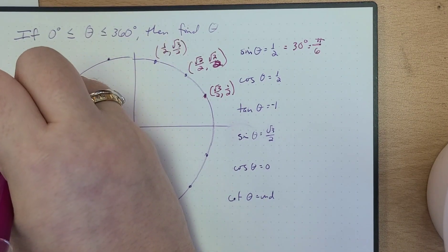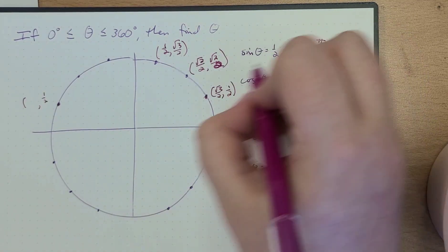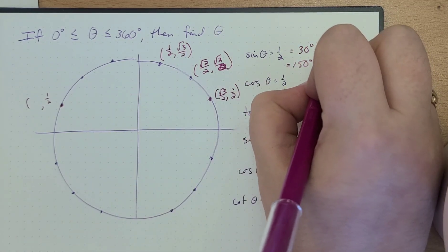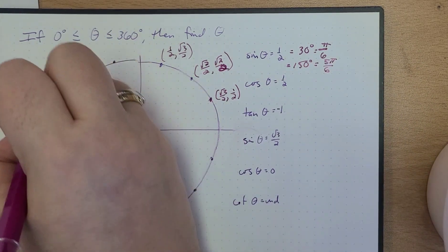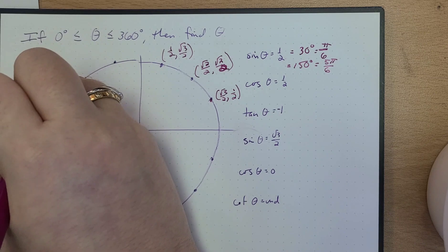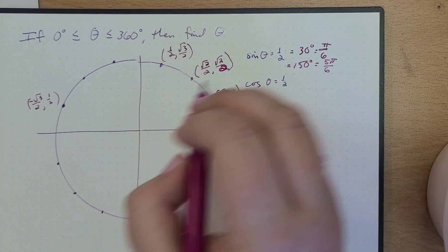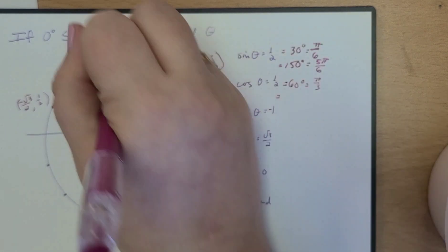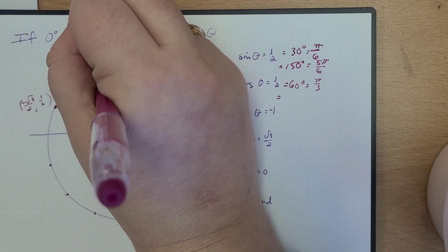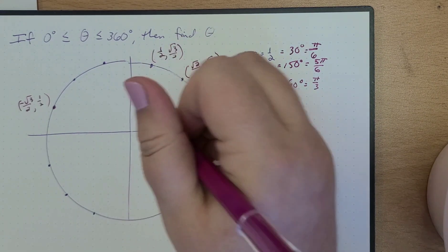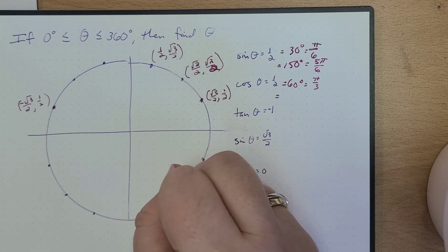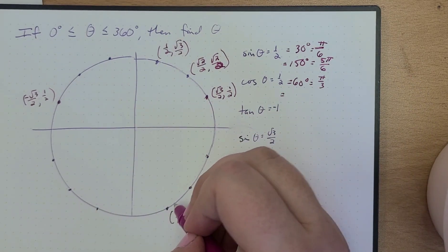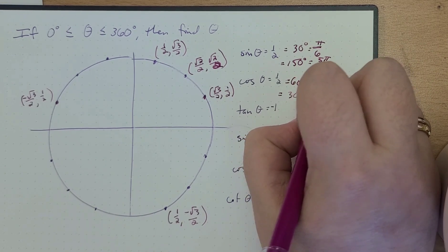But we also know that there's a positive one half here too. So we could also put — what's this angle here? This angle here is 150 degrees, which is equal to 5π/6. For cosine, when is cosine one half? Cosine is one half right here — that's at 60 degrees, which is equal to π/3. But it would also be a positive one half right here — this is (1/2, −√3/2). So this is going to be 300 degrees, which is equal to 5π/3.